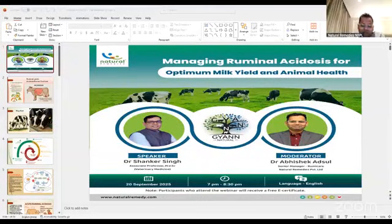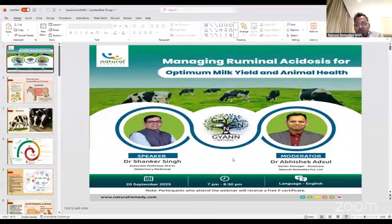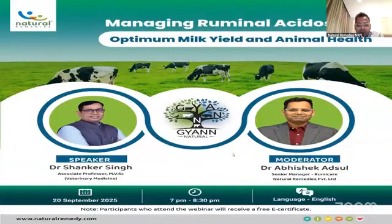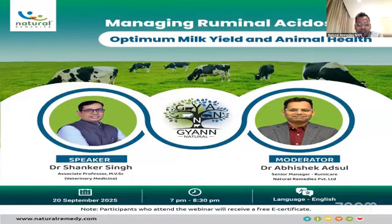Good evening and welcome to this GAN webinar series. Today's webinar is Managing Rumenal Acidosis for Optimal Milk Yield and Animal Health. Our speaker is Dr. Shankar Singh. The rumen is a very important part of the body of a dairy animal, and rumenal acidosis is a very challenging condition nowadays.